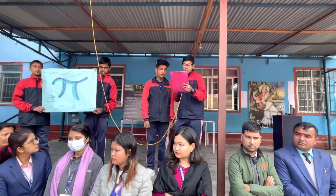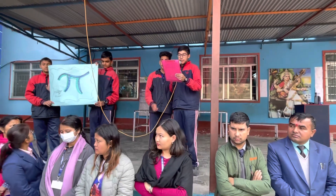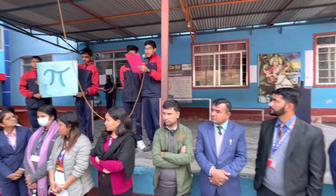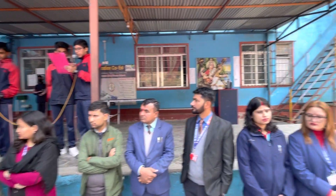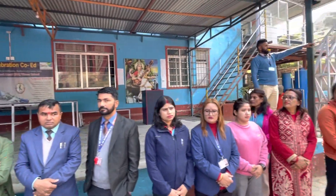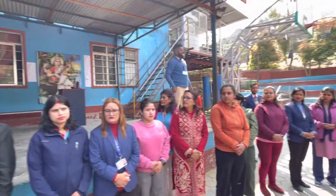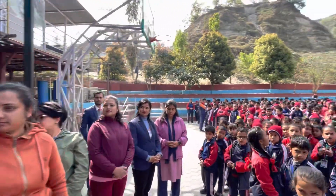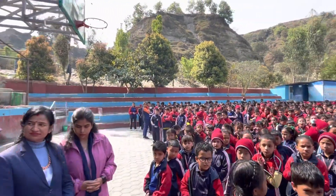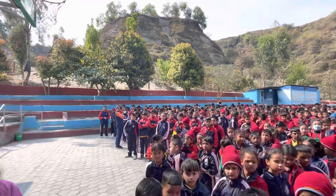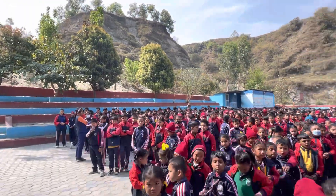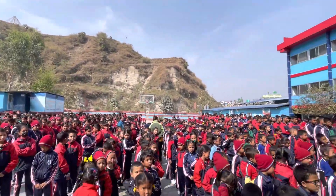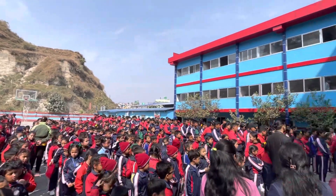It was identified and discovered by a French mathematician, Georges Buffon, in the mid-18th century. Being an irrational number, phi cannot be expressed exactly as a common fraction, but still, values such as 22 by 7 and other rational numbers are commonly used.